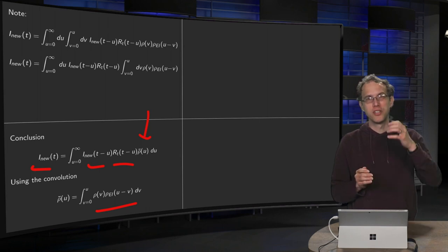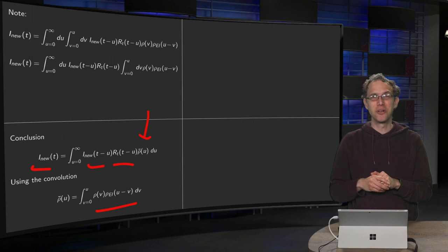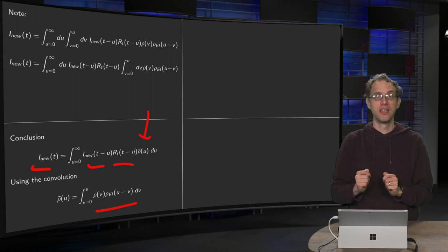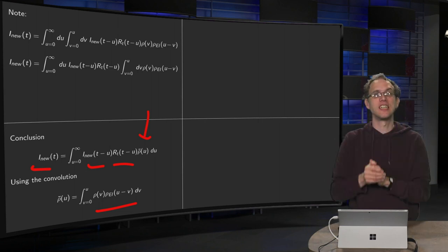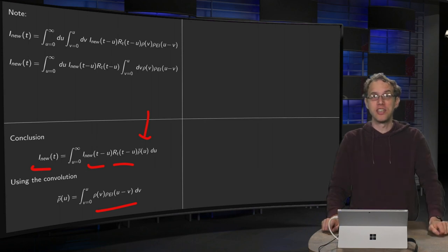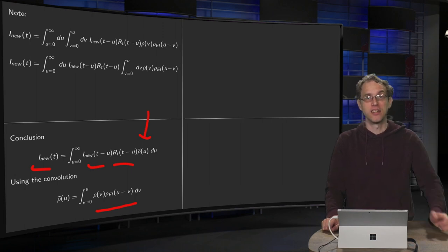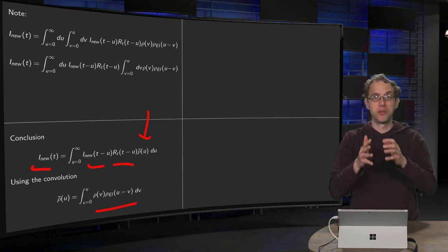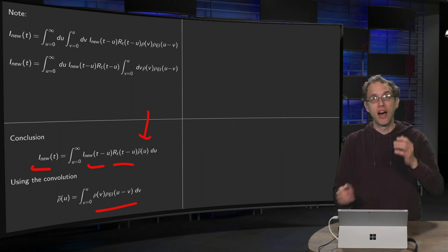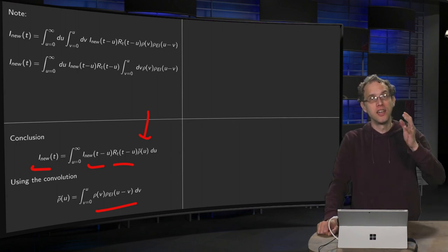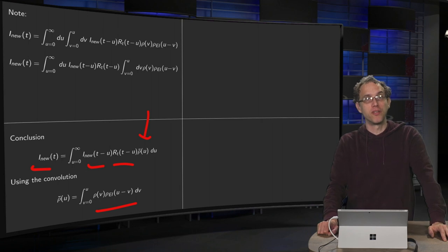But wait a minute, this reproduction number is now somewhere inside an integral. Doesn't that cause some problems? I'd like to have R_t equal something, and now I have I_new equals an integral and the R_t is inside there. We would like to have the R_t explicitly. In fact, we can try to find an explicit formula for R_t, because as it is now, R_t is in principle known if you know the R_t's, but we want to solve for it explicitly. How can we find R_t explicitly? That will be a subject of one of our next videos.